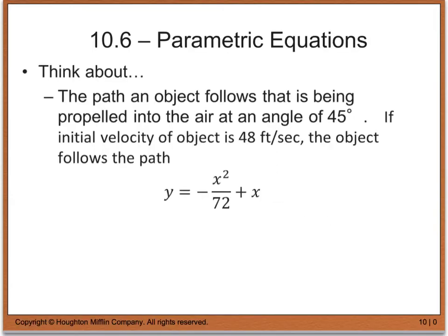Let's think about this for a second. The path an object follows that is being propelled into the air at a 45-degree angle — if the initial velocity of an object is 48 feet per second, then the equation of that object is given by y equals negative x squared divided by 72 plus x. This is what we call the rectangular equation. Now this equation only tells you where an object has been, not when it was at a certain point. So to find out when, we're going to have to introduce a third variable called t, and this is what we call a parameter.